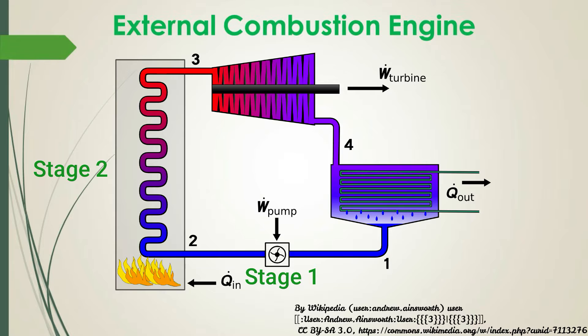At the second stage of the process, the high pressure liquid enters a boiler, where it is heated at constant pressure by an external heat source to change the liquid to high energy saturated vapor.